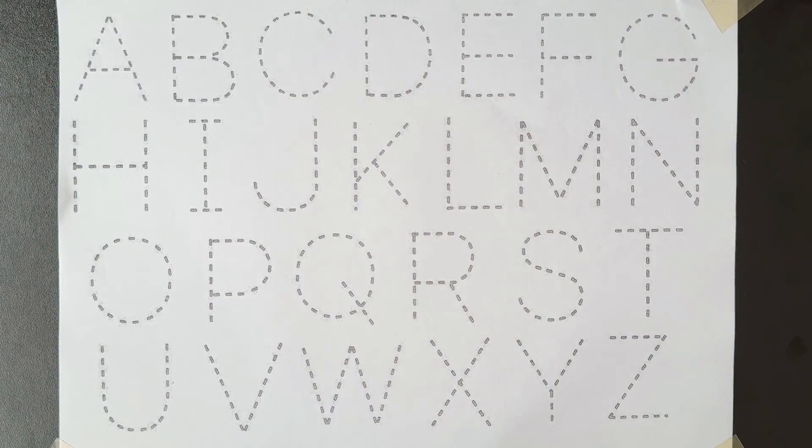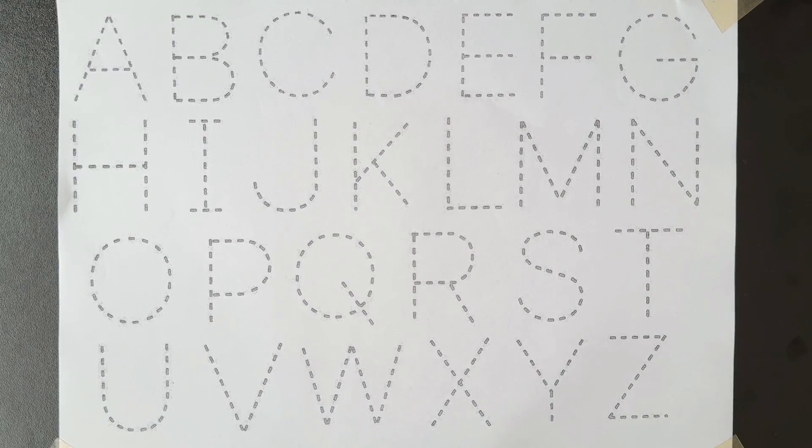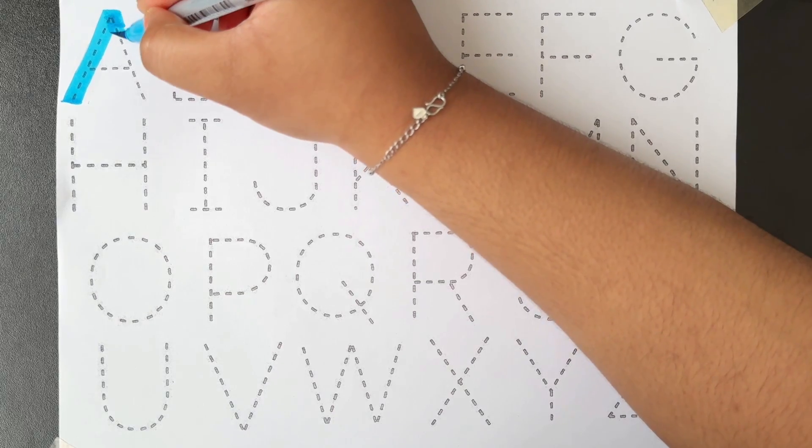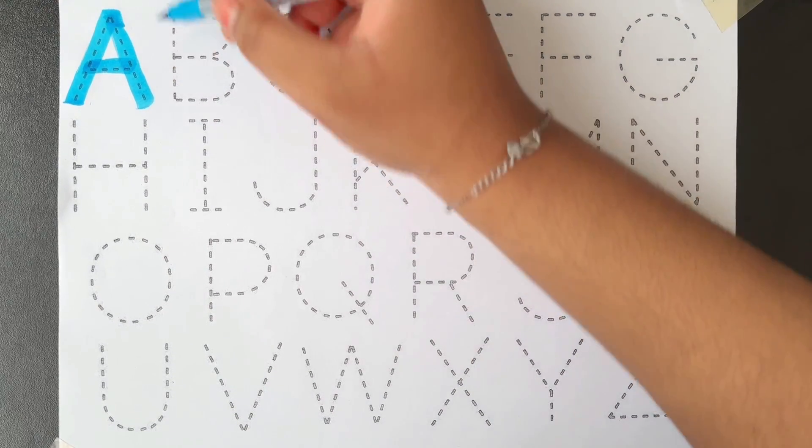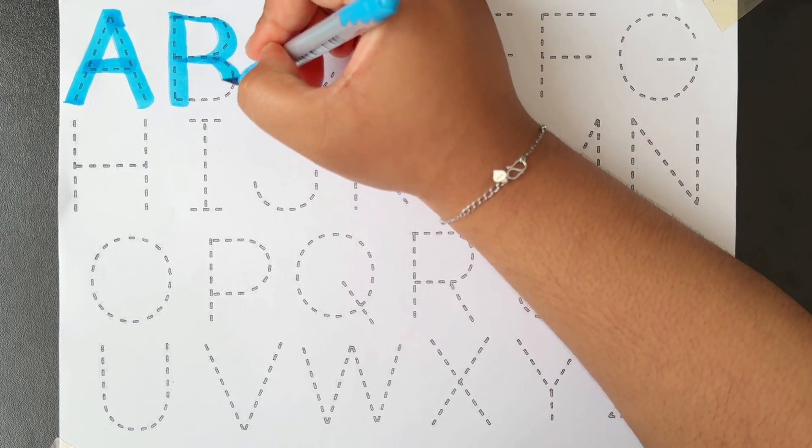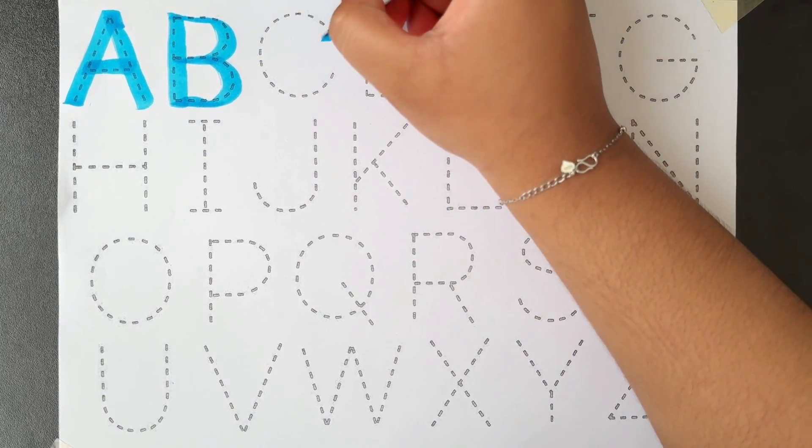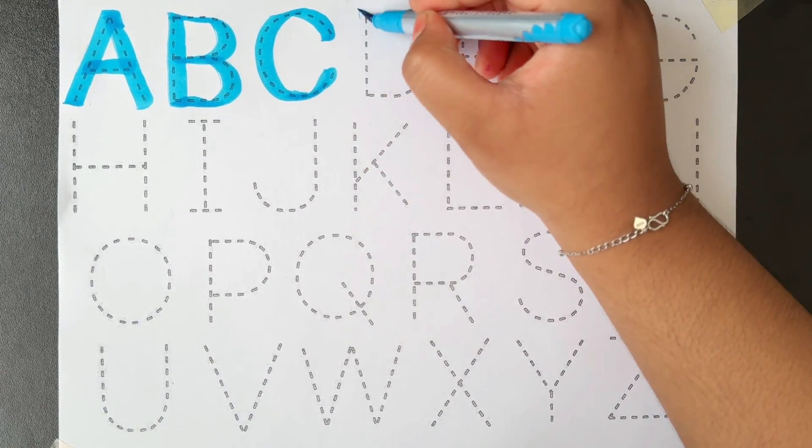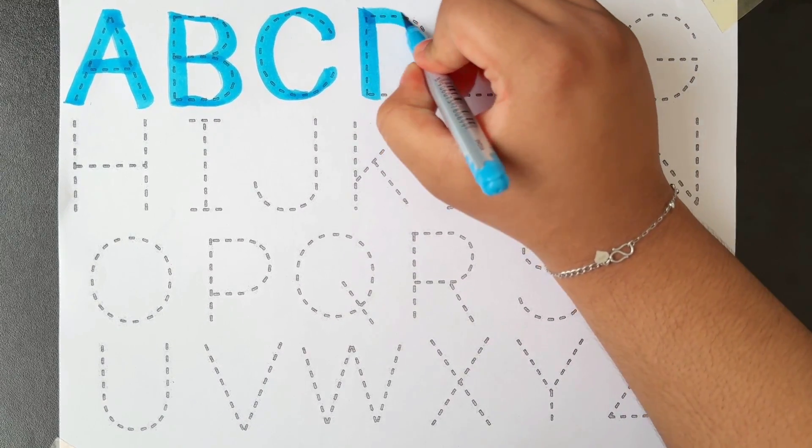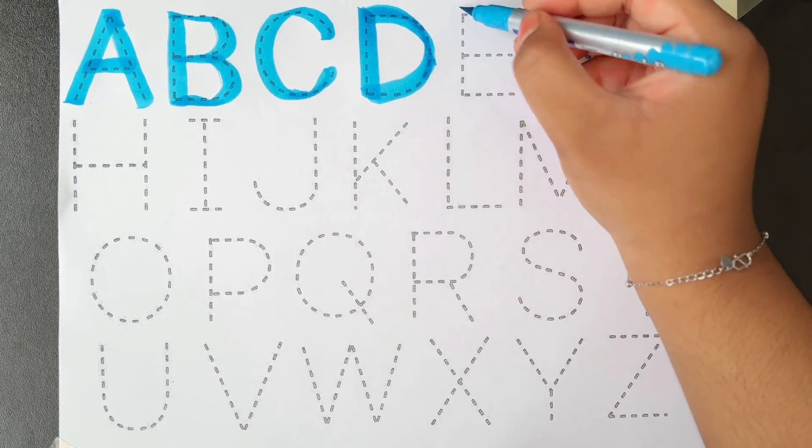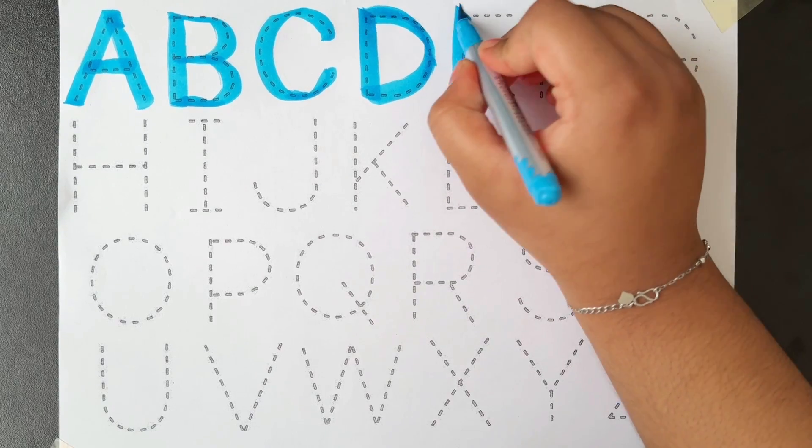Today we will learn uppercase alphabets A, B, C. Let's start with letter A. A for animals. B for basket. C for crocodile. D for diamond. E for elephant.